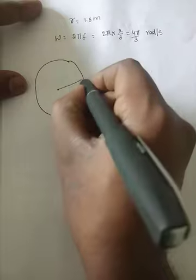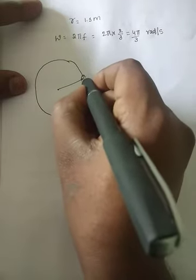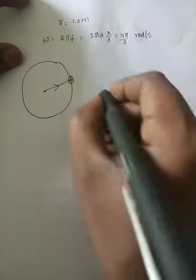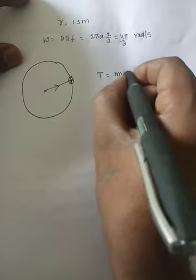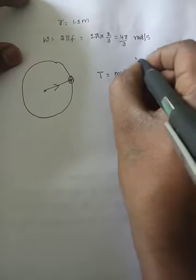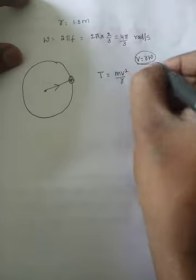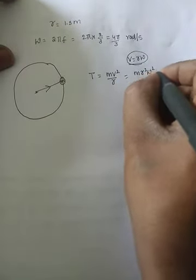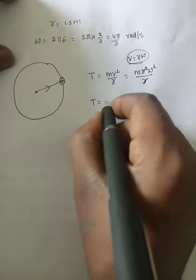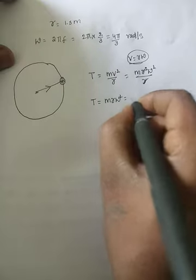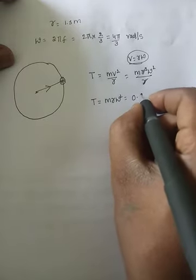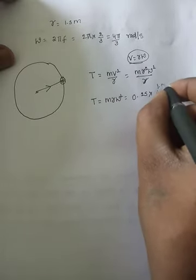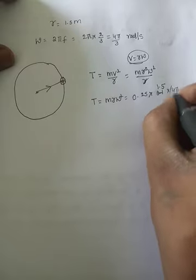The stone of mass m is fixed here and making rotations. The tension in the string equals the centripetal force. Tension equals mv²/r, but since v = rω, substituting gives mrω². So tension equals mrω²: m is 0.25 kg, radius is 1.5, ω is 4π/3. The tension in the string is 6.58 newtons.